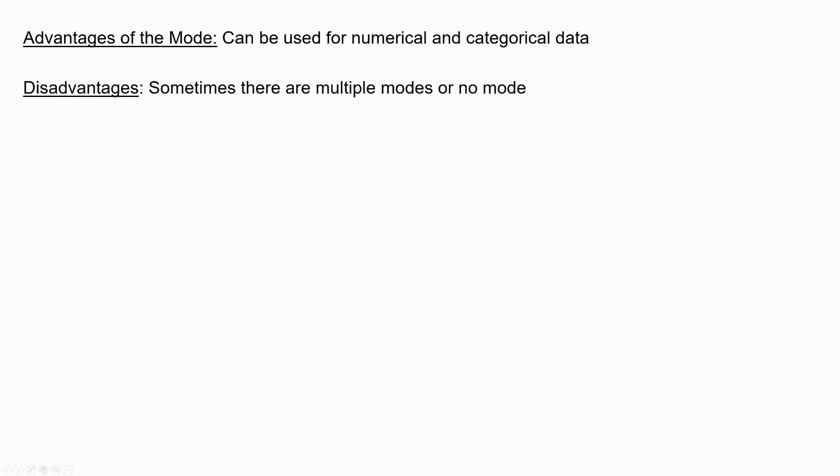The problem is sometimes there are multiple modes or no modes. So if we look here, in example A, two and three both come up the most, as in they come up more than five and seven. We can say that two and three are both modes.